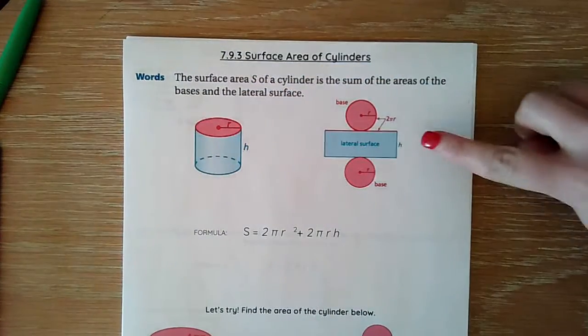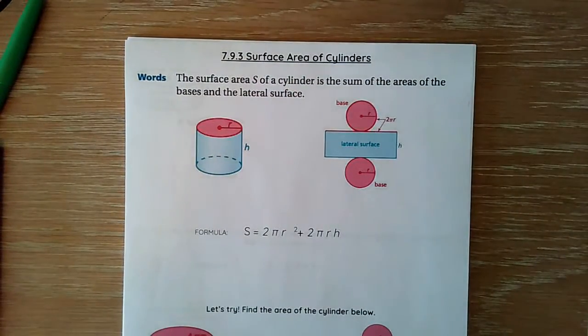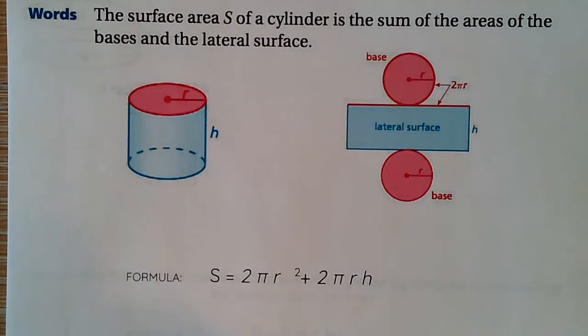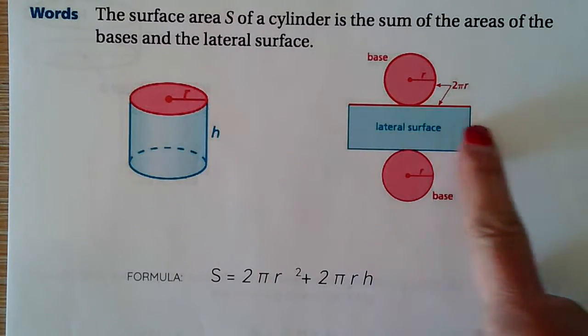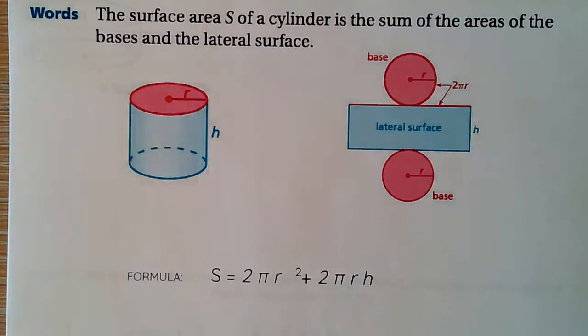So when we open up into our net, we've got our rectangular shape. So our cylinder is made of two circles on either end that are identical and then one long lateral rectangular surface.